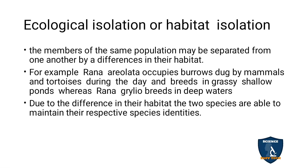The first pre-zygotic type is ecological isolation or habitat isolation. The members of the same population may be separated from one another by differences in their habitat — how they are living, where they are living. They are in the same population only, but can be separated based on habitat. For example, Rana aerolata occupies burrows dug by mammals and tortoises during the day and breeds in grassy shallow ponds.